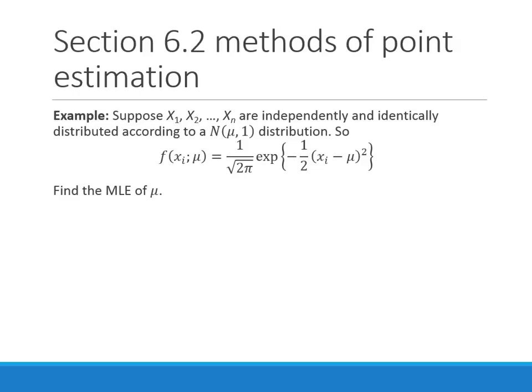Suppose we have a random sample x1 through xn from a normal distribution where the mean mu is unknown but the variance is known to be one. The distribution of each xi looks like the normal PDF with sigma squared equals one plugged in. We want to find the maximum likelihood estimate of mu.